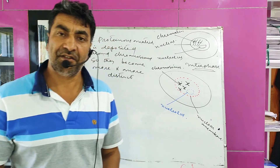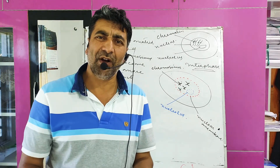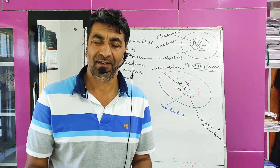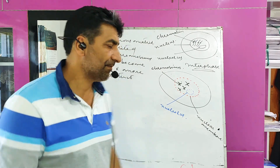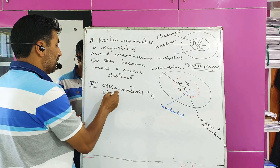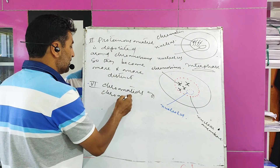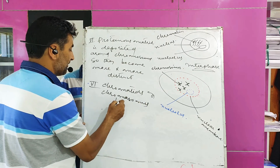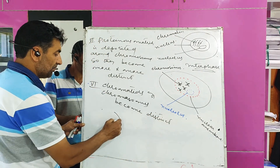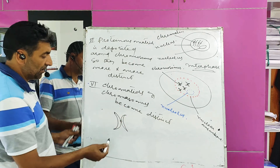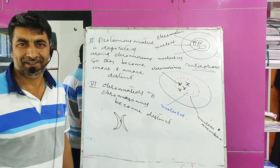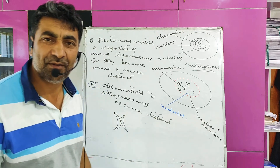As you might already know the structure of chromosomes — chromosomes have two identical structures called chromatids. So chromatids also become visible and distinct. Suppose this is a chromosome: this is one chromatid and another chromatid, and these two identical parts of the chromosome are called chromatids. These chromatids also become distinct during prophase.